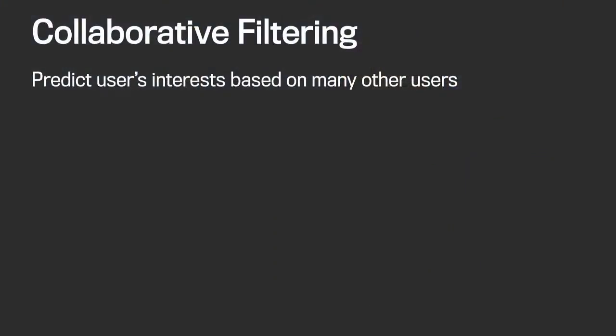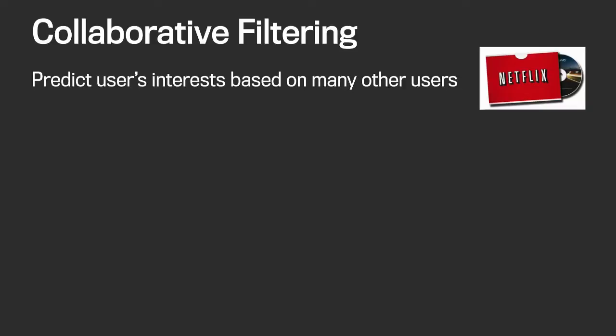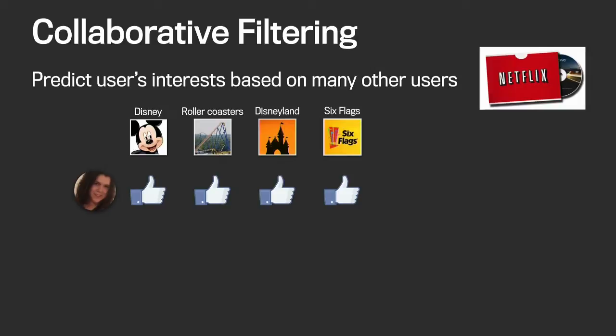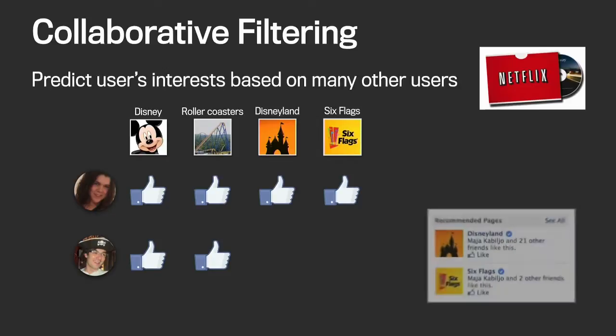Collaborative filtering is a technique for predicting users' interests based on interests of many other users. The basic idea is that if two users have similar opinions on a few topics, they probably have similar opinions on other topics as well. The problem became very popular with the Netflix Prize competition for predicting user ratings on movies. But it can be applied in many domains — for example, on Facebook, we could apply it to pages a user may like. So if I like Disney, roller coasters, Disneyland, and Six Flags, and Alex likes Disney and roller coasters, it's more likely he'll like those other two pages and might get them as recommendations.